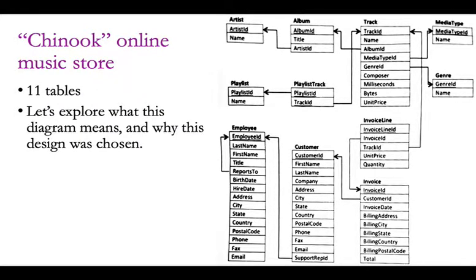Here's an example called Chinook — basically an online music store database with information about customers, employees, purchases, and music. Music is represented at multiple levels: artists, albums, tracks, playlists, genres, etc. It's 11 tables, moderately complex. In this lecture we'll try to understand why it's structured the way it is — breaking it into 11 different tables is not trivial, and there are reasons for the split.